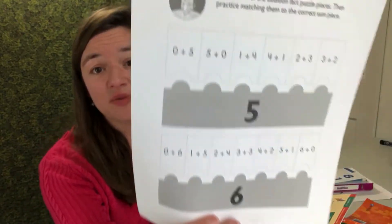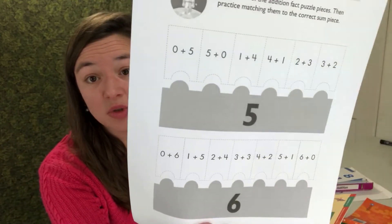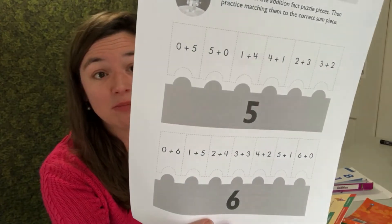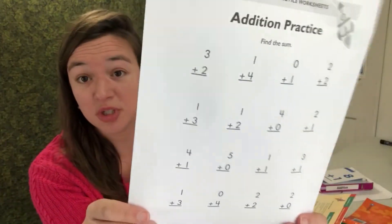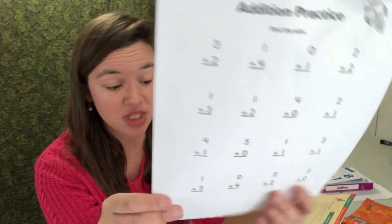So, we have lots of resources on there for the fact practice. Here's one example. We have these fact puzzles. And so, you cut them out, and the kids have to match which facts go with the 5, which facts have a sum of 6. We also have just straight up worksheets. If you're a worksheet person or if your child likes worksheets, you can print some of these.